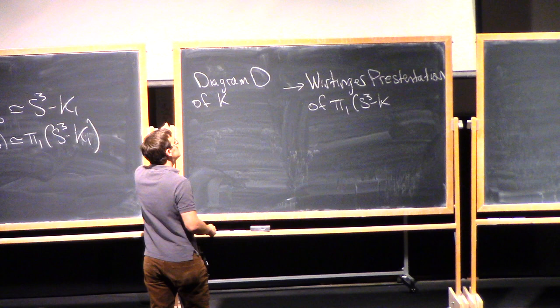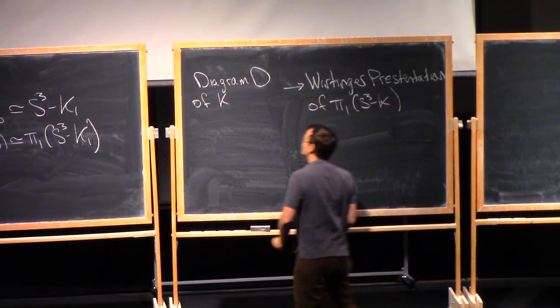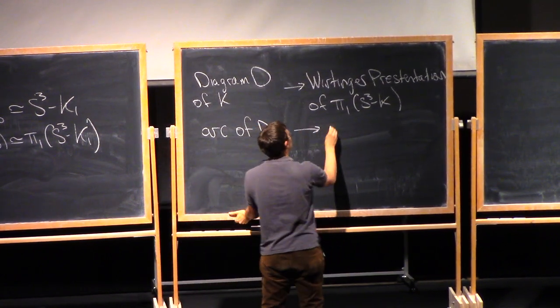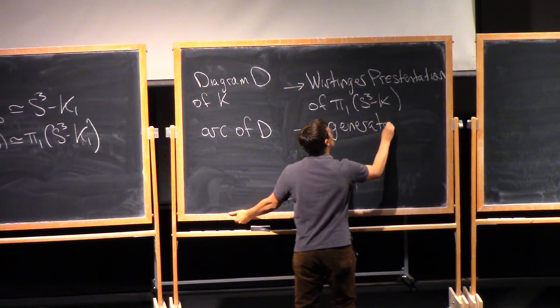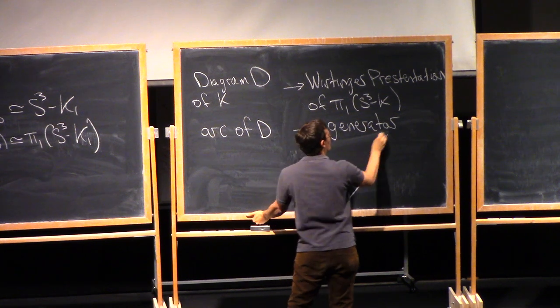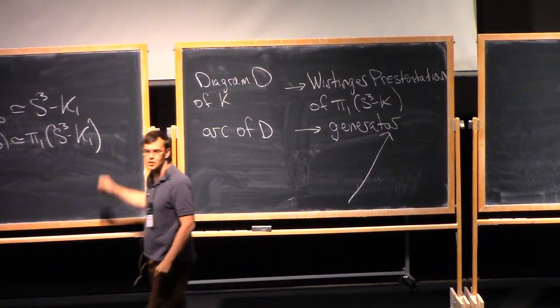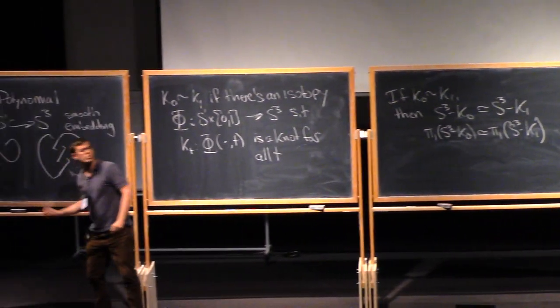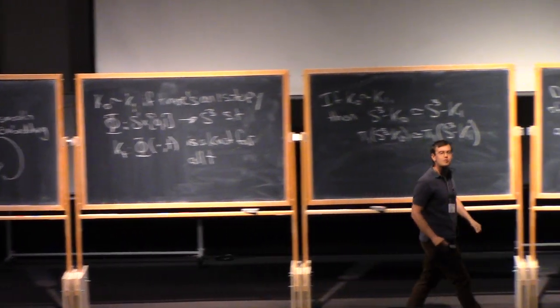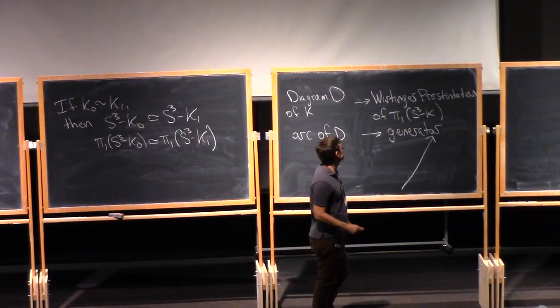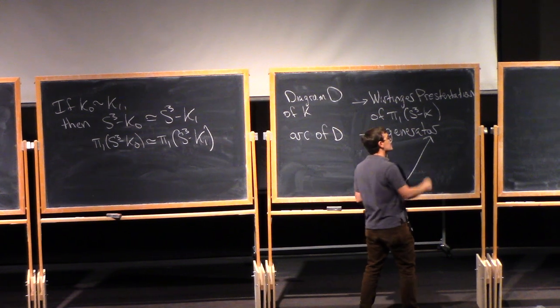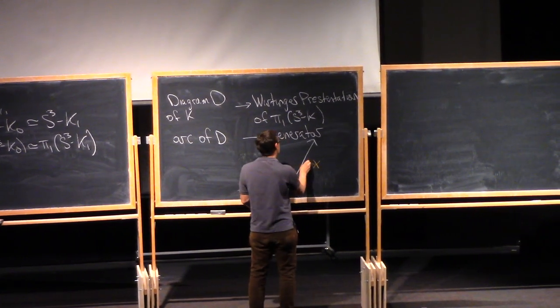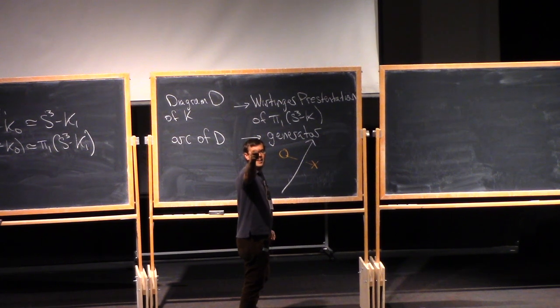Alright, so for example, that means that pi-1 of the complement of K-naught is isomorphic to pi-1 of the complement of K-1. So maybe if we want to use this, we ought to know how to compute pi-1 of the knot complement. So let me tell you how to do that quickly. So a diagram D of K gives me what's called the Wirtinger presentation of pi-1 of the knot complement. And the way that this works is that for each arc of the diagram D, I get a generator in pi-1.